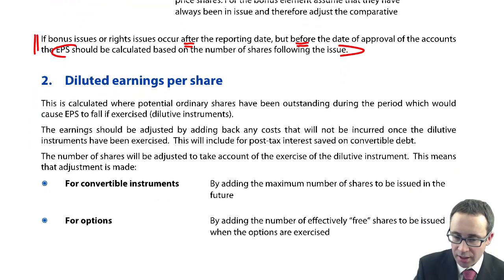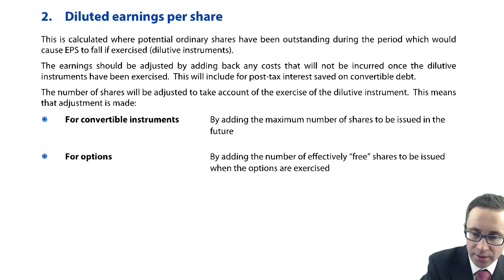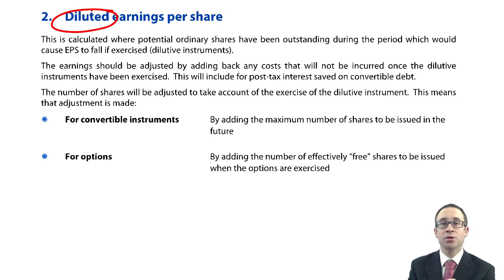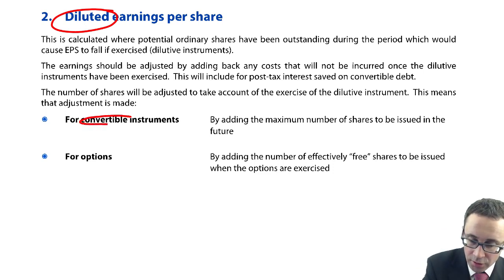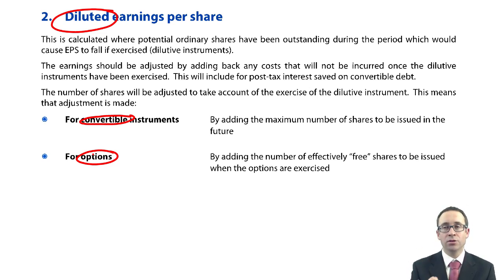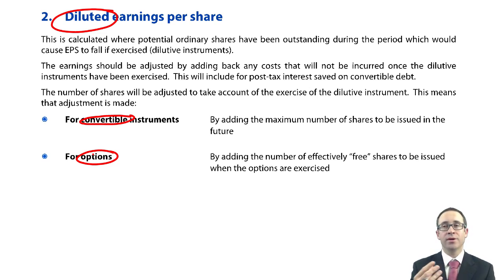Your diluted earnings per share goes through and takes account of future issues of shares based upon what was outstanding at the reporting date, and how that future issue of shares could potentially impact your profit for the year. We needed to look at convertible instruments and options. Convertible instruments will at some point in the future be converted into shares, but when you convert those debentures or convertible instruments into shares, you no longer pay interest. So as well as adjusting for the maximum additional number of shares to be issued in the future, you also need to account for the fact that there will then be no interest paid, and therefore your earnings will go up by the post-tax interest saving.